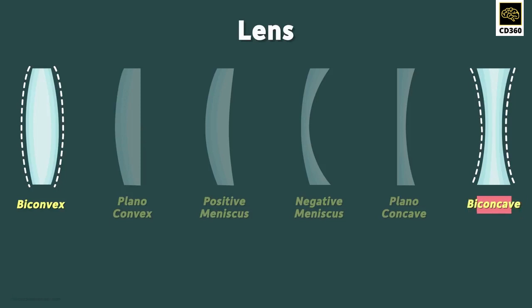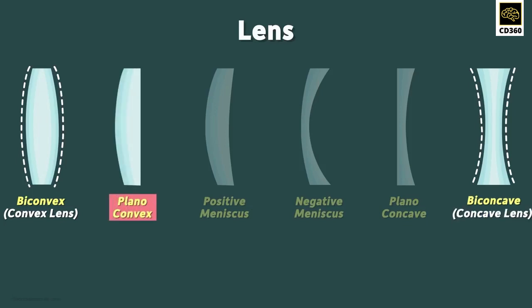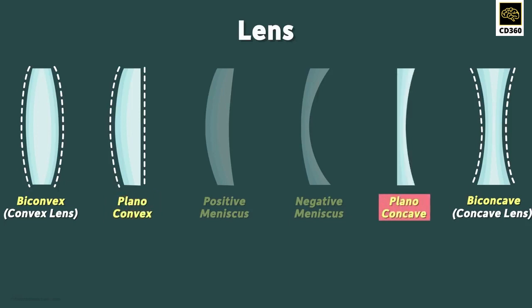For simplicity, instead of biconvex or biconcave, we call them convex lenses and concave lenses. A plano-convex lens has only one spherical surface curved inward and the other surface is plain. Similarly, in a plano-concave lens, the spherical surface is curved outward and the other surface is plain.